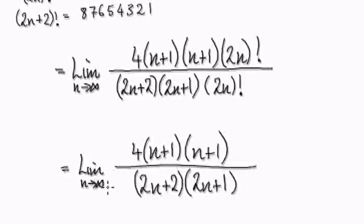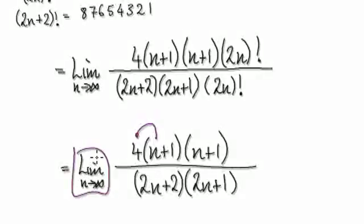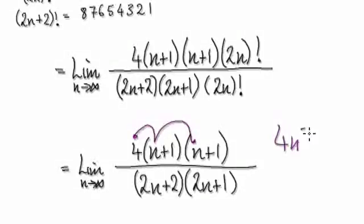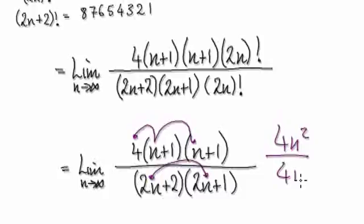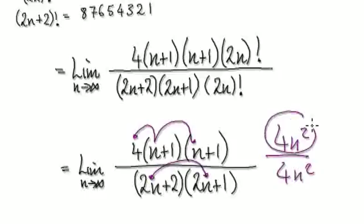Remember, we are trying to find the limit as n tends to infinity. When you get to this stage, you are really after the leading term, because you're trying to find the limit as n tends to infinity. So get this times this times this — that will be 4 to the power of n squared. We can pretty much ignore all the rest because we are looking at the leading term. This times this gives you 4n squared. So the limit of this is actually 1.